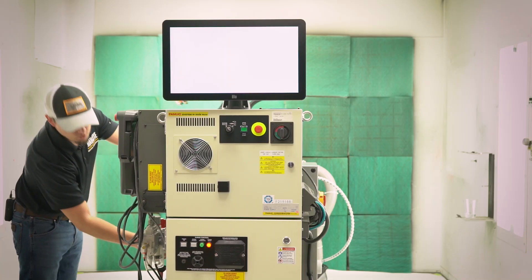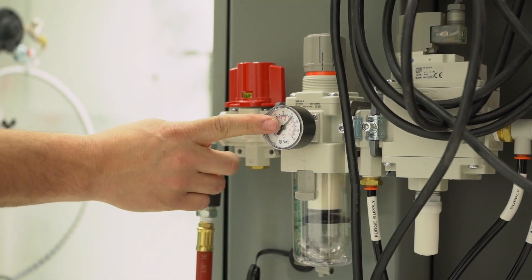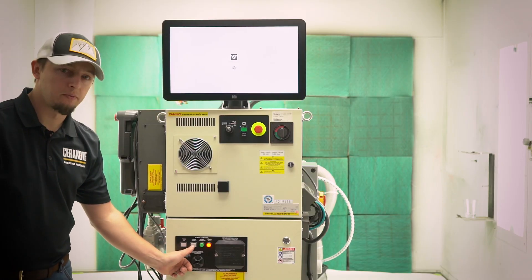We need 90 PSI at 12.5 CFM. Then we'll open up the main area regulator, and we'll be able to begin our purge enable process.